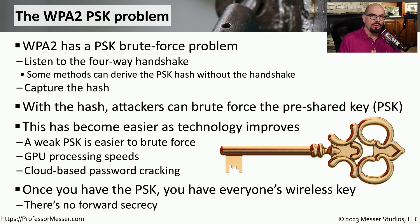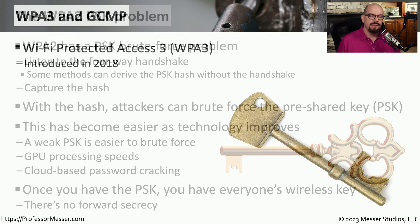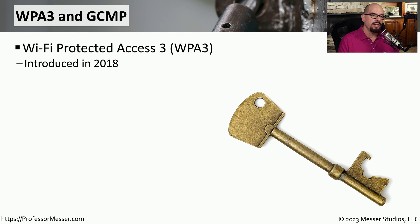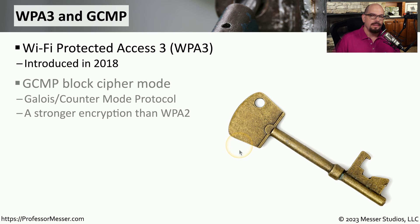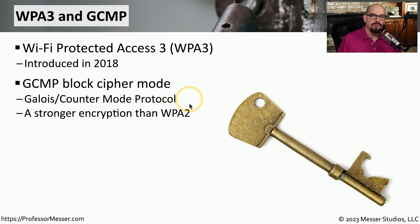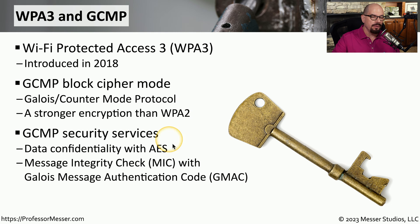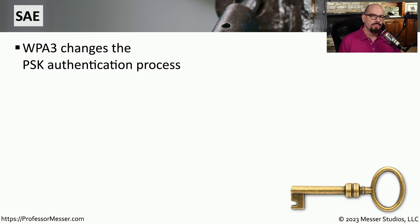On networks like our home networks that commonly use pre-shared keys, anyone who has that key is now able to connect to the network. When it came time to update WPA2 to the new version of WPA3, we introduced new technologies to avoid this type of brute force attack. This includes a new block cipher mode called GCMP — that stands for Galois Counter Mode Protocol — and it is a stronger encryption than what was used previously with WPA2. GCMP includes data confidentiality with the encryption associated with the AES protocol, and it has a message integrity check included with that Galois message authentication code. The brute force that could be used to derive a pre-shared key with WPA2 is no longer a problem with WPA3.